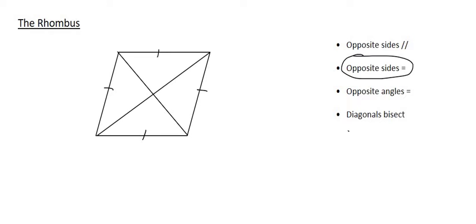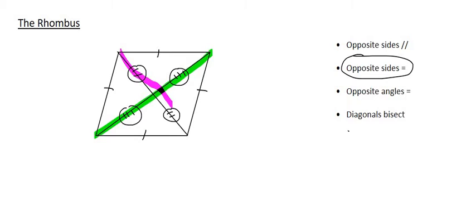Let's take a look at the diagonals. We know that a parallelogram has diagonals that bisect each other, so this segment is the same as that, and this one is the same as that. But these two diagonal lengths are not going to be the same as each other — that only happens with a rectangle. The green diagonal goes all the way from here to here, whereas the purple one just covers this little distance, so the green one is definitely longer. With the rectangle the two diagonals became the same length, but that doesn't happen in a rhombus.